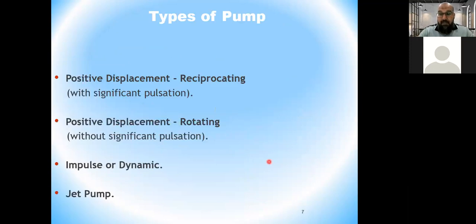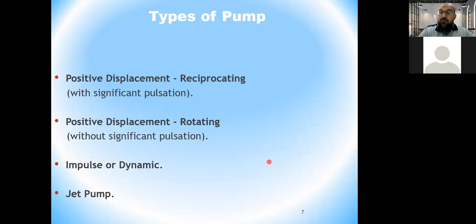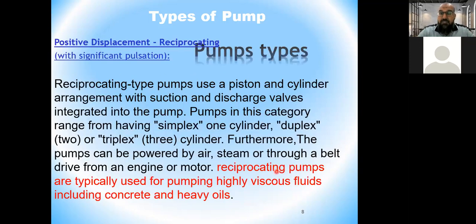There are different types of pumps. We have positive displacement pumps — like reciprocating pumps with significant pulsation, and rotary pumps without significant pulsation. We also have dynamic or impulse pumps, such as centrifugal pumps and jet pumps.